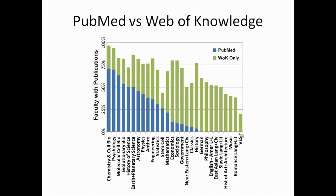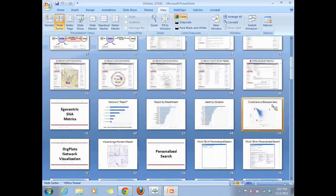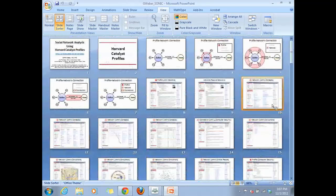Another example is the School of Education at Harvard — what's very important to them is consultations with K-12 school districts. They want to know which two faculty have consulted on the same school district, consulted on geographically close school districts, or districts with the same socioeconomic background. Their consultational K-12 school district networks look very similar to biomedical research co-authorship networks — it's just a different kind of network you're looking at.